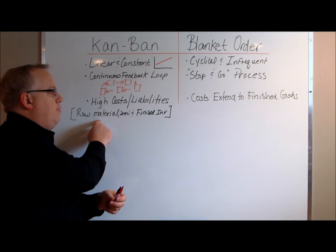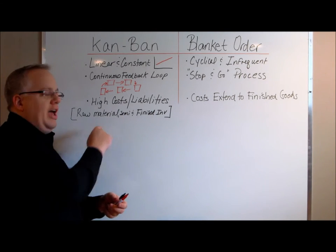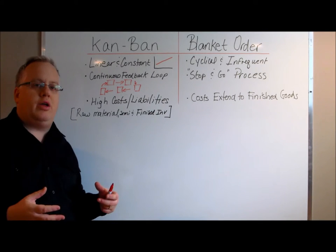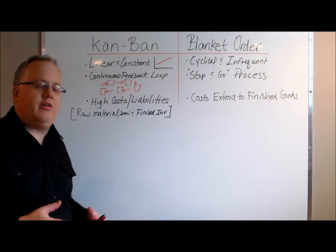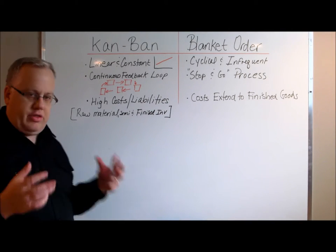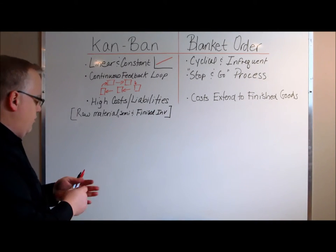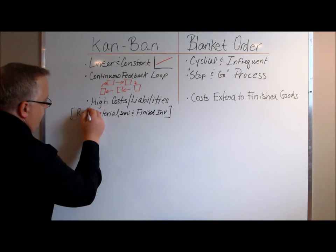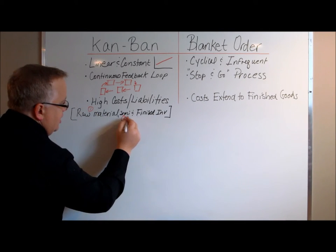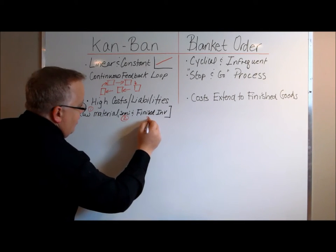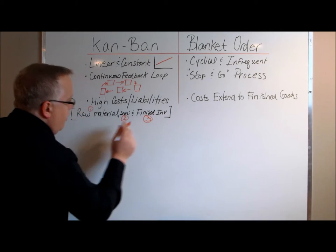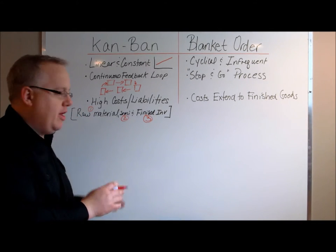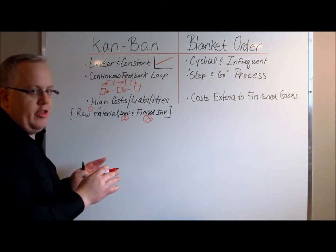That leads into the third point: there are high costs and liabilities both for you and your customer when it comes to a Kanban agreement, and that's why the contracts are so large. What you're covering is raw materials, semi-finished inventory, and finished inventory. There are three essential aspects of running a Kanban agreement that are very expensive.